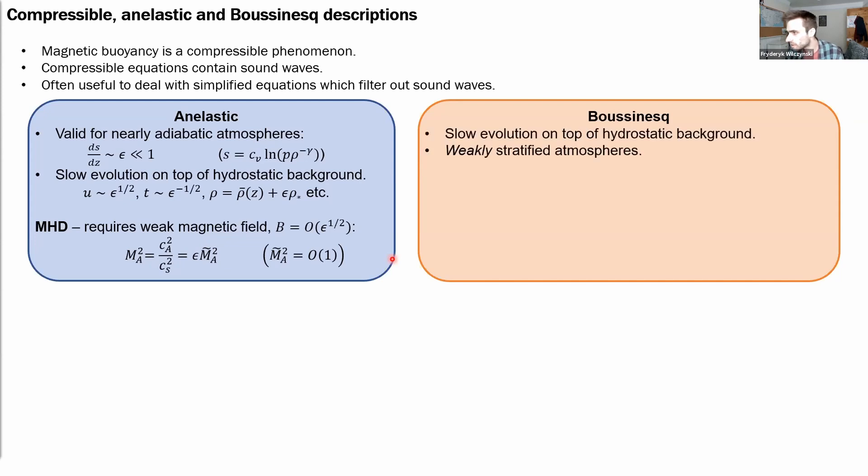The Boussinesq approximation is based on the same ideas but with the further restriction that the stratification is weak. Then including the magnetic field into the standard Boussinesq approximation, one can obtain the equations of Boussinesq magnetoconvection,